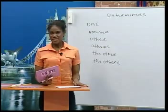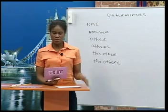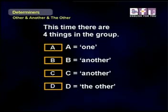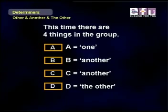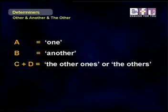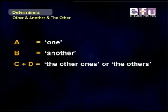Let's look at the next chart. This time there are four things in the group. A is the first thing — we call it 'one.' B is 'another.' C is 'yet another.' And then the last one, D, we say 'the other.' We can also look at the group another way: A is one, B is another, and then C and D are 'the other ones' or 'the others.'